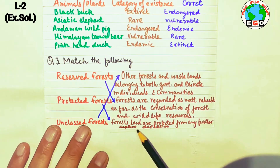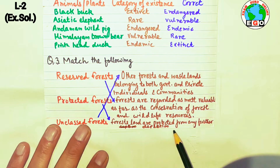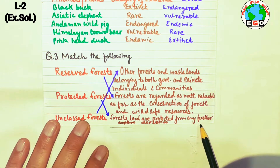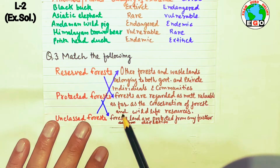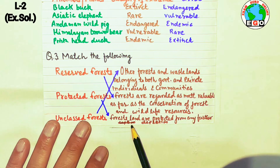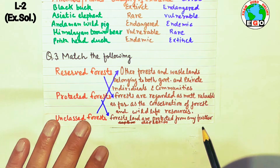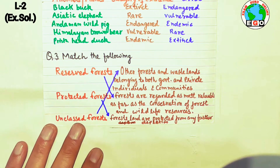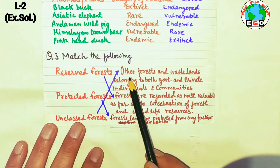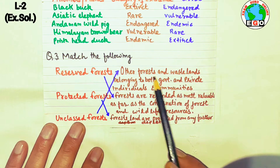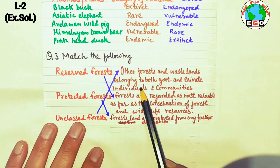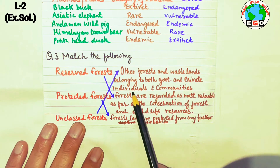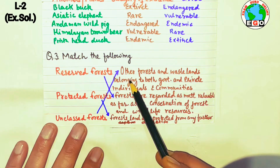Protected forests are forest lands protected from further depletion — they are protected so that trees and wildlife are not damaged and are preserved. Unclassed forests refer to other forest and wasteland belonging to the government, private individuals, or communities.